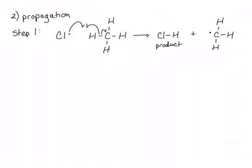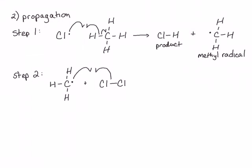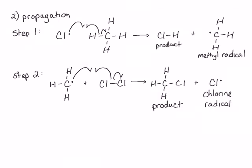The methyl radical continues on to propagation step two. Step two involves a reaction between the methyl radical and another molecule of chlorine. The carbon radical — the methyl radical — abstracts a chlorine atom from the chlorine molecule, breaking the Cl–Cl bond homolytically, forming a new bond between carbon and chlorine, and creating another chlorine radical from the other electron in the Cl–Cl bond. The products are chloromethane, which is one of the products of the overall reaction, and another chlorine radical, which can start again in step one of propagation.